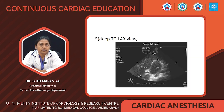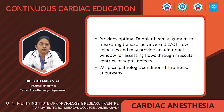The next view is the deep transgastric long-axis view. This view is obtained by advancing the probe deep into the stomach and anteflexing the tip to obtain the view at 0 to 20 degrees. This view is important because it provides optimal Doppler beam alignment for measuring transaortic valve and LVOT flow velocities. It may also provide an additional window for assessing flow through muscular ventricular septal defects, and we can assess LV apical pathology such as LV thrombus or LV aneurysm.